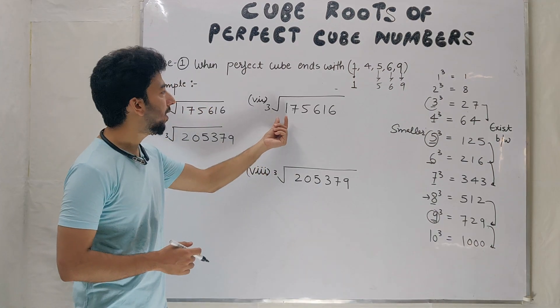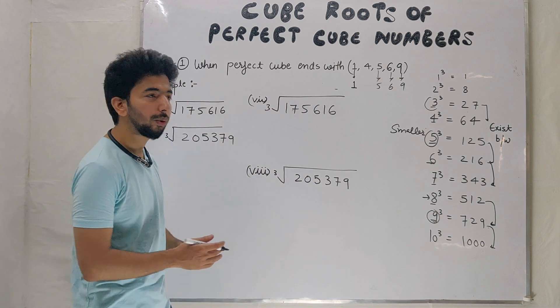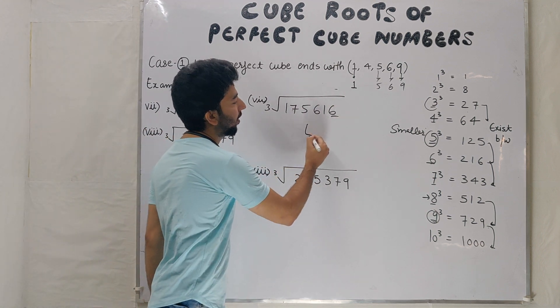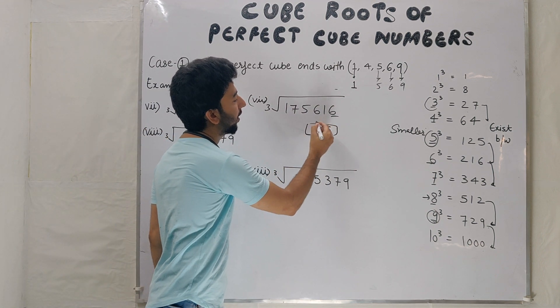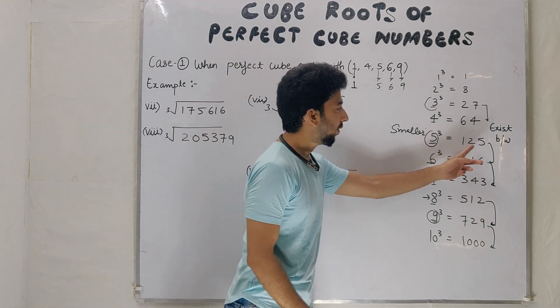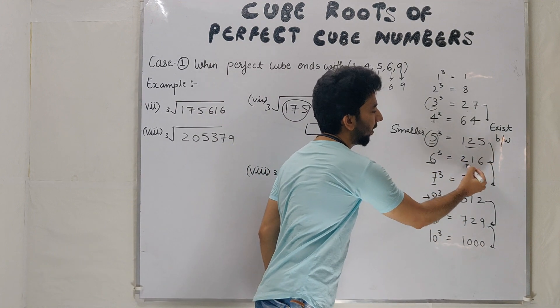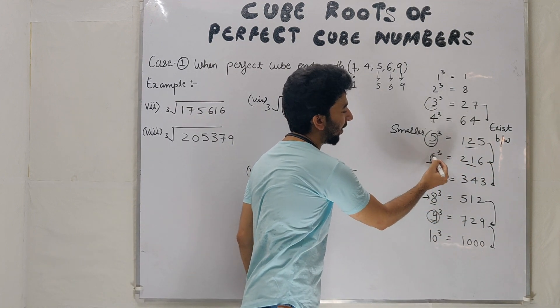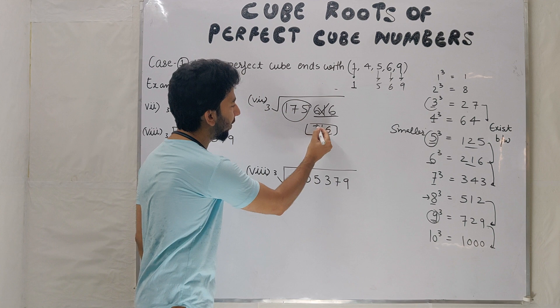Check where the number lies - between 27 and 64, which are 3 and 4. Smaller one is 3, answer is 35. Number 7: 175616, cube root, end digit 6, end digit 6. Cancel, 175. Between 125 and 216, 5 and 6, smaller one is 5, answer is 56.